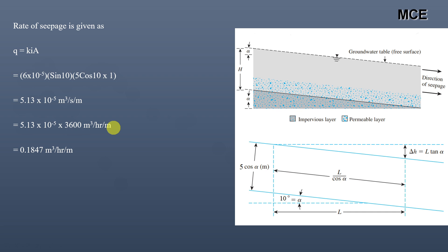This is how you calculate the rate of seepage through a permeable layer. You find the head loss between two points and the length of flow to get the hydraulic gradient, then apply Darcy's formula. I hope this solution was clear and effective. If you still have doubts, write them in the comment box below. Thanks for watching Master Civil Engineering and stay tuned.